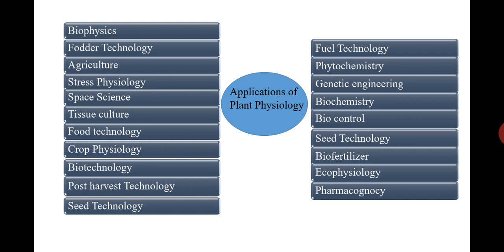Eco-physiology is the science which deals with ecology — how the surroundings and environment affect the plant and its physiology. Then pharmacognosy, which is a science that deals with the study of raw drugs. Plant physiology gives knowledge about which chemicals are present in the plant and in which particular part they are present, so that part of the plant can be used as a drug.